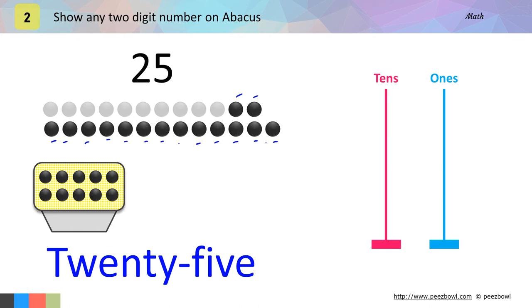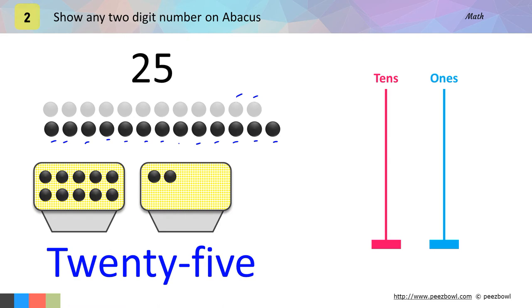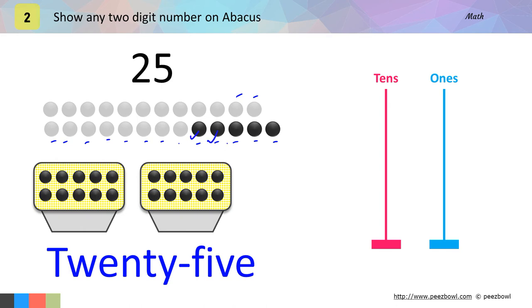This is more than 10, so let us bring a new box. Here we have 1, 2, 3, 4, 5, 6, 7, 8, 9 and 10 balls in the second box. Let us see how many balls are left now. Now we have 1, 2, 3, 4 and 5 balls left. So now these 5 balls will stay outside the box.